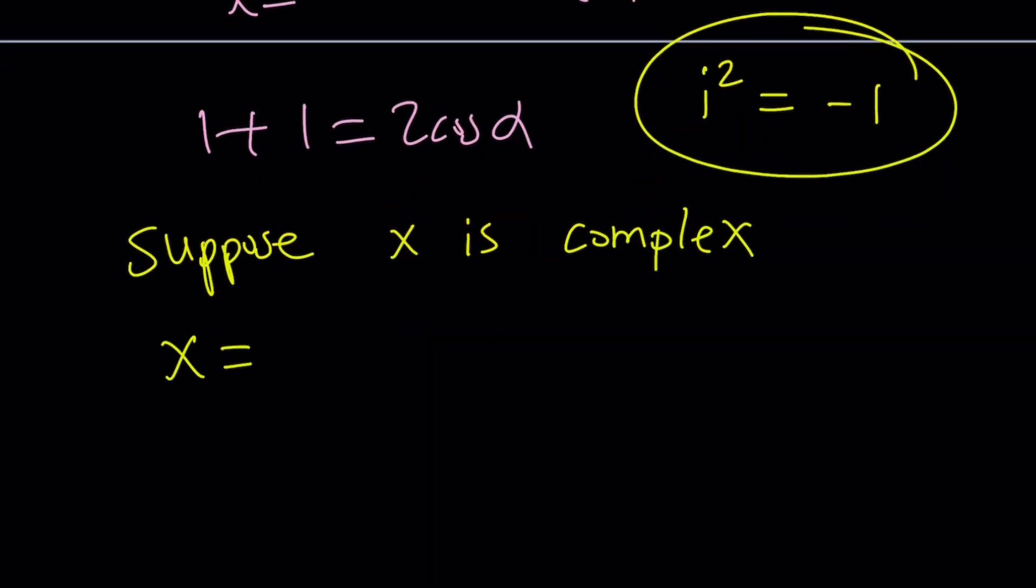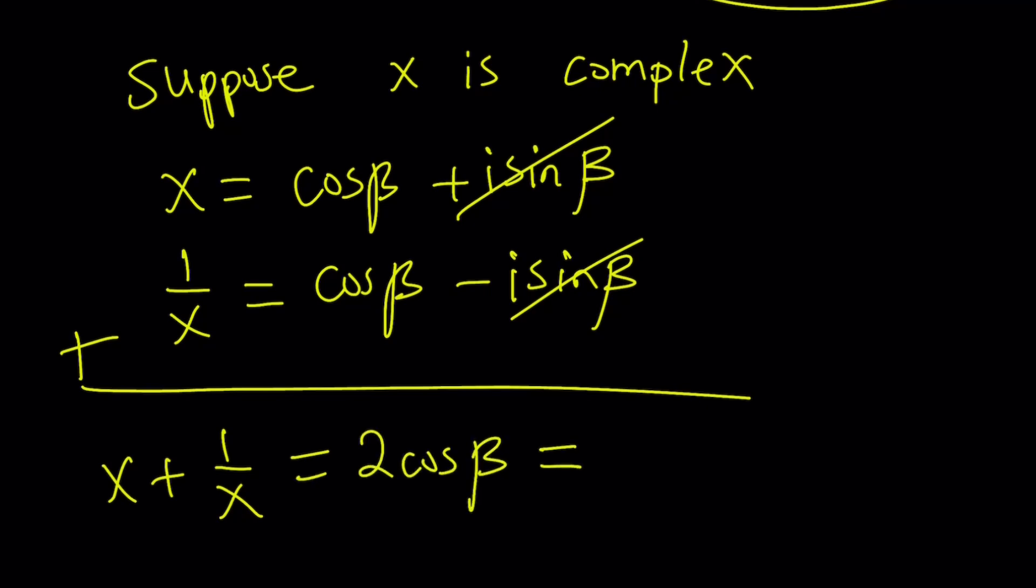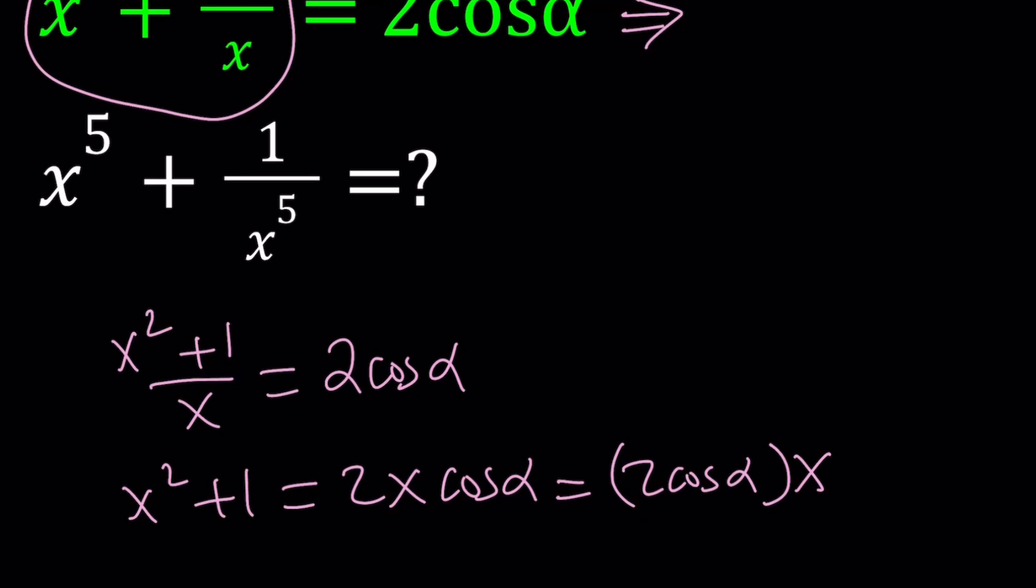What happens? So, I can write it as cosine beta plus i sine beta. Why did I use a different angle? Because I don't know what x is. I'm just using a different angle. And how do you find the reciprocal of a complex number in polar form? Easy. Just replace beta with negative beta because that's what it is. So, you get cosine beta minus i sine beta. We could maybe talk about it later on in a different video. But guess what? When you add these up, something mathematical happens. x plus 1 over x, these two cancel out. We end up with 2 cosine beta. Wait a minute. Didn't you say x plus 1 over x is 2 cosine alpha? Yes, I did say that. The problem said that. But how come it's equal to 2 cosine beta?